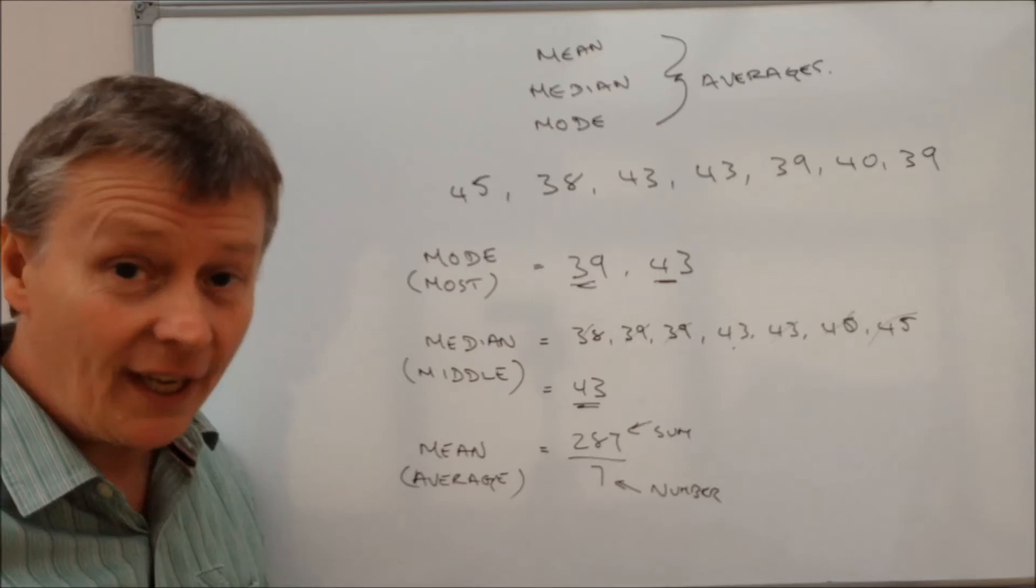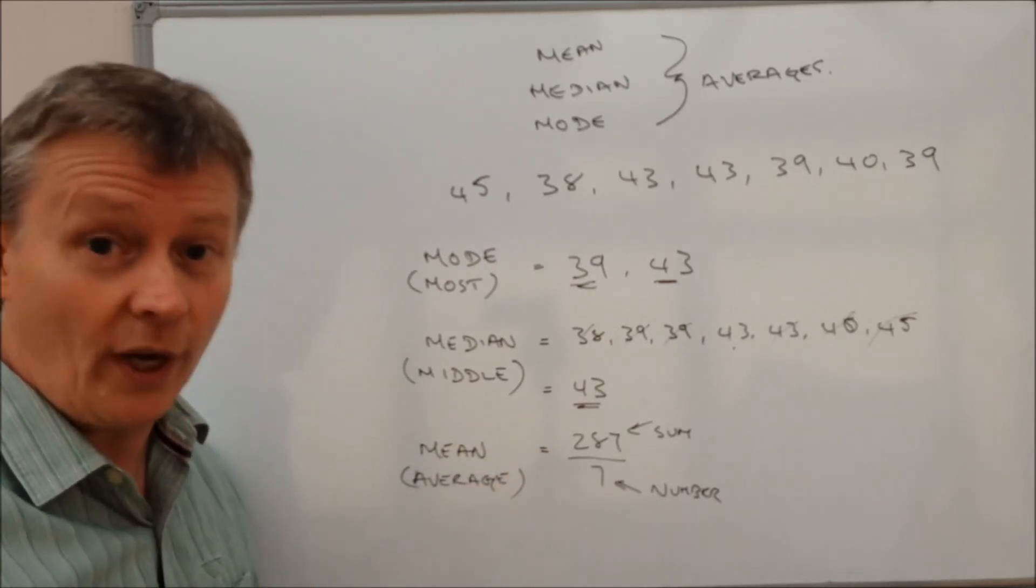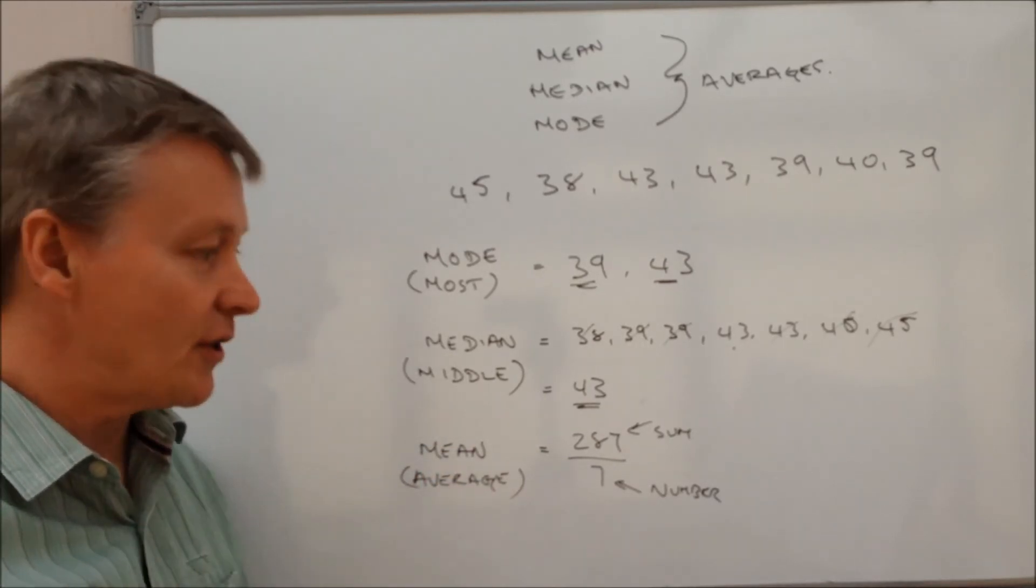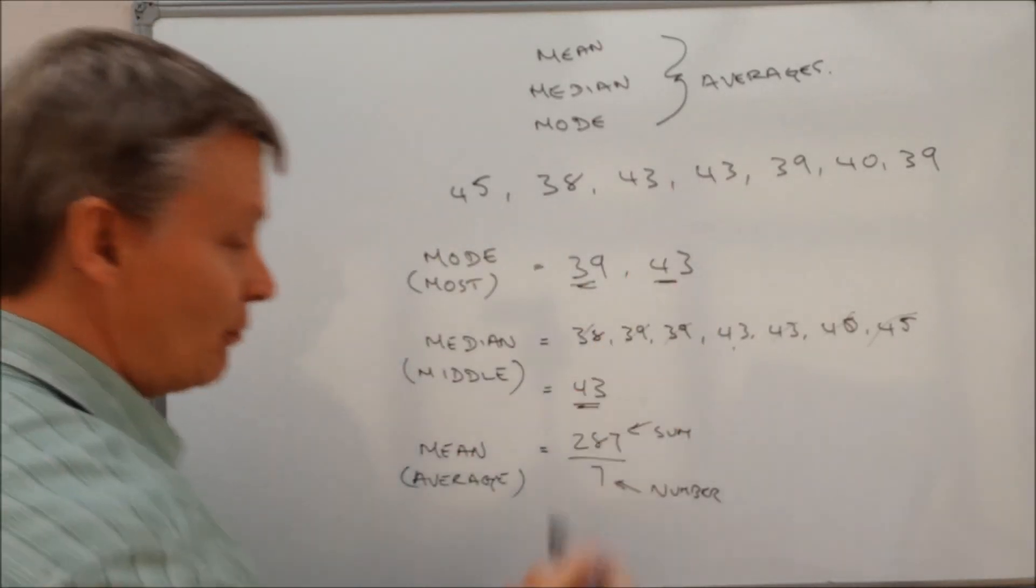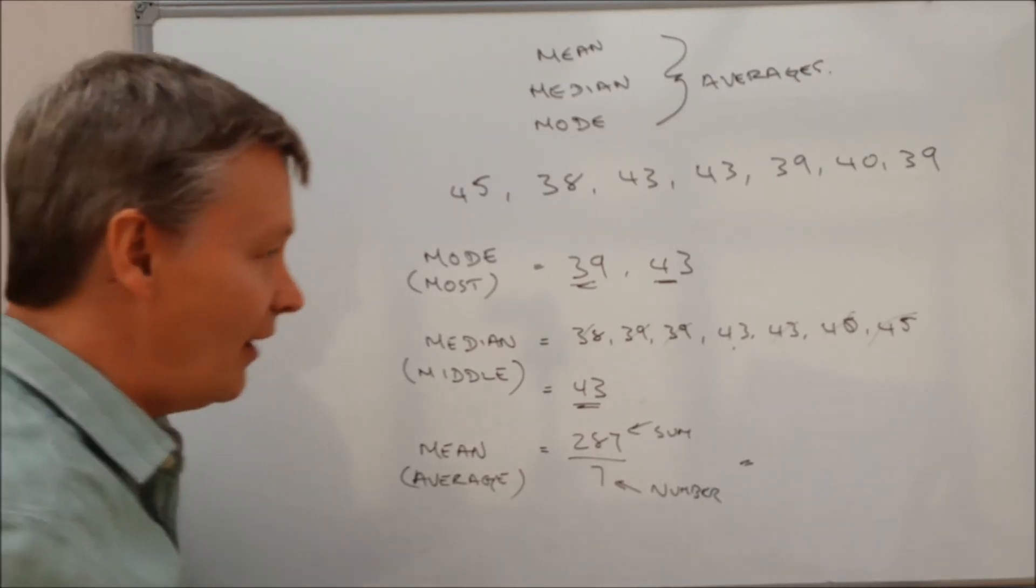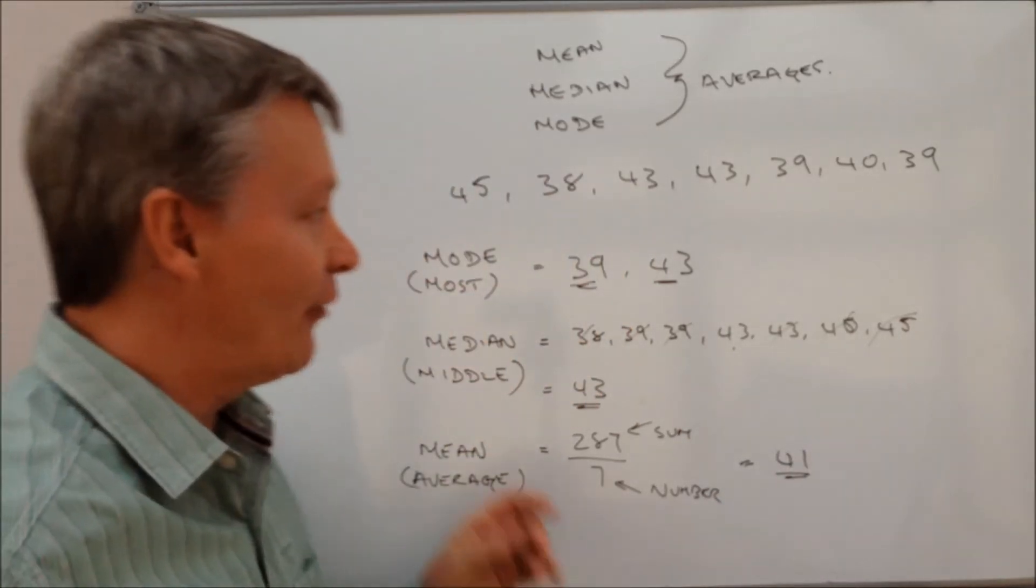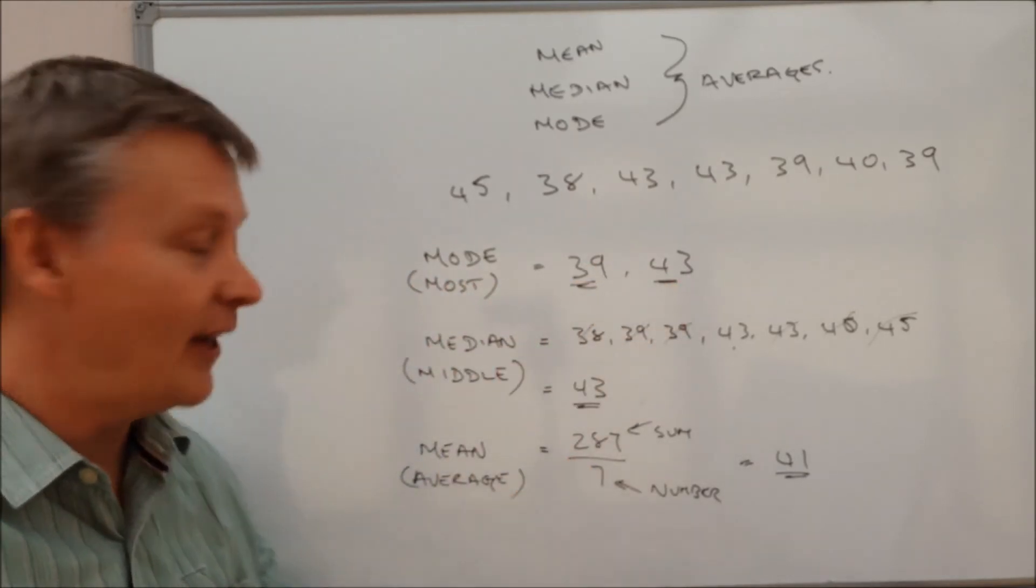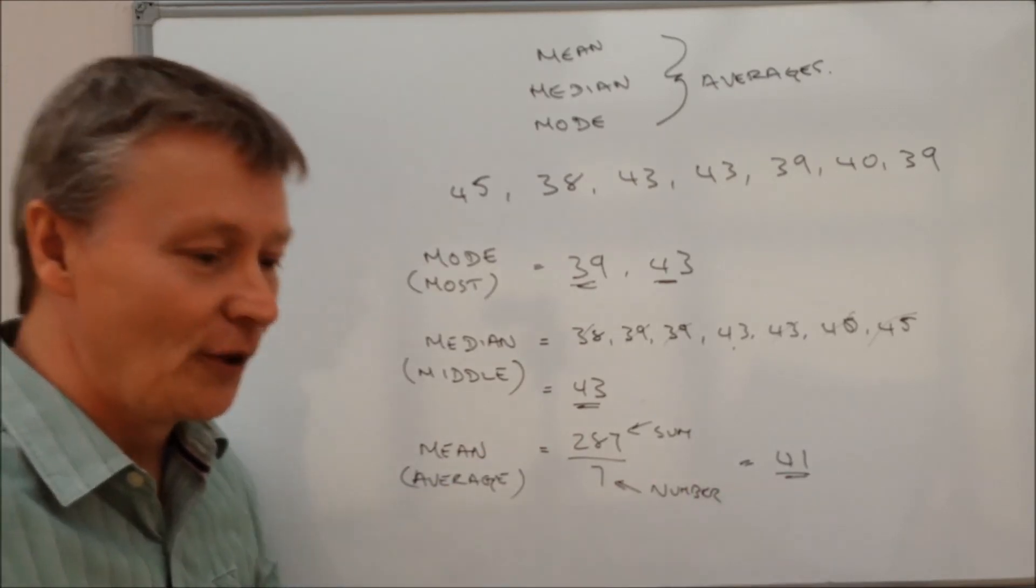And if you have a look at some of the other videos on the playlist, that will give you some applications and some word questions that are used to try to find out the means of a series of numbers or some given situations. So the mean of this set of numbers, of this rather odd person writing out the relative's ages, is 41. So the three numbers, sorry, the four answers that we're looking for is the mode, which is 39 and 43, the median, which is 43, and the mean, which is 41.